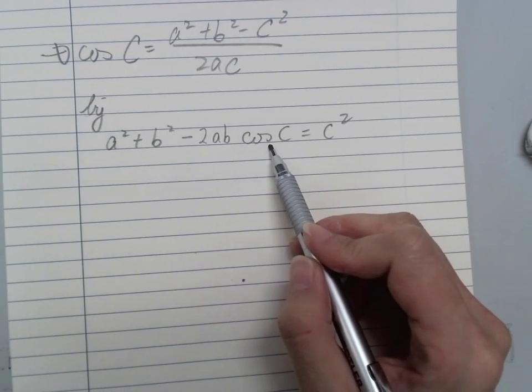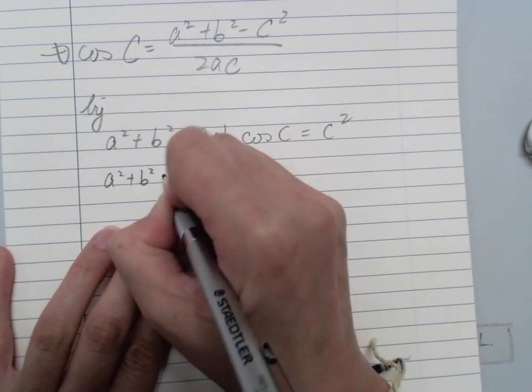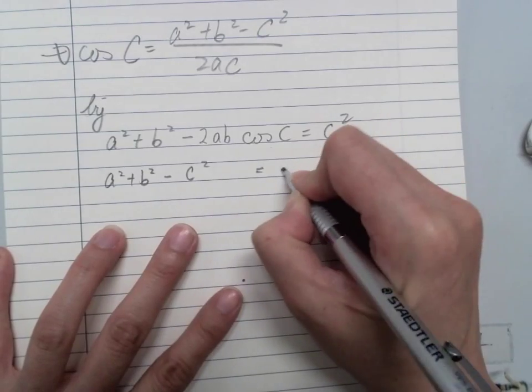But I want to leave the C on the other side. So I'll leave that onward. So A² + B² - C² equals to 2AB cos C.